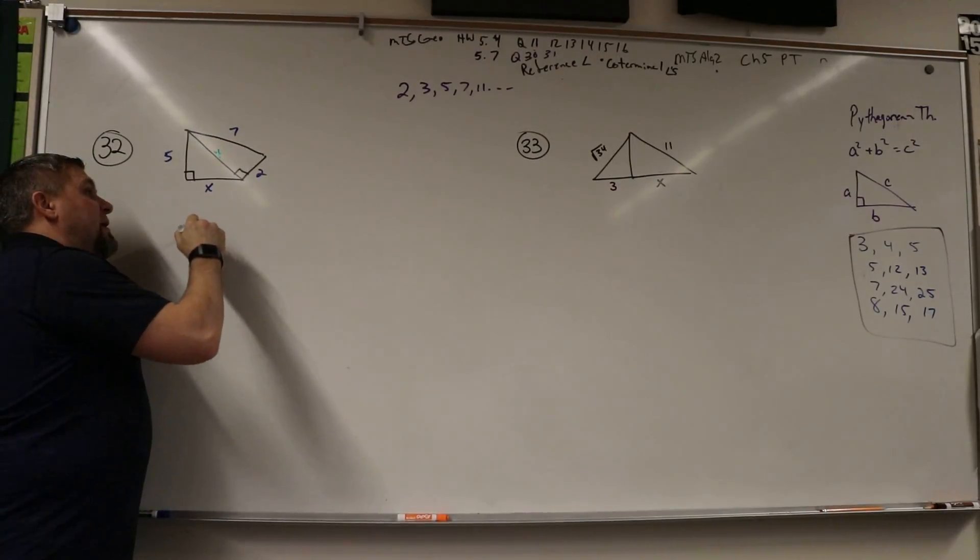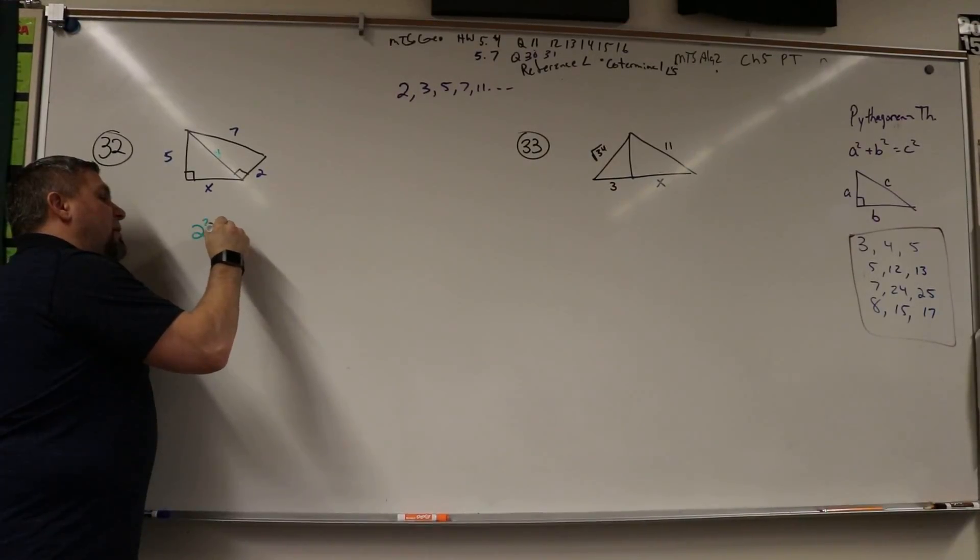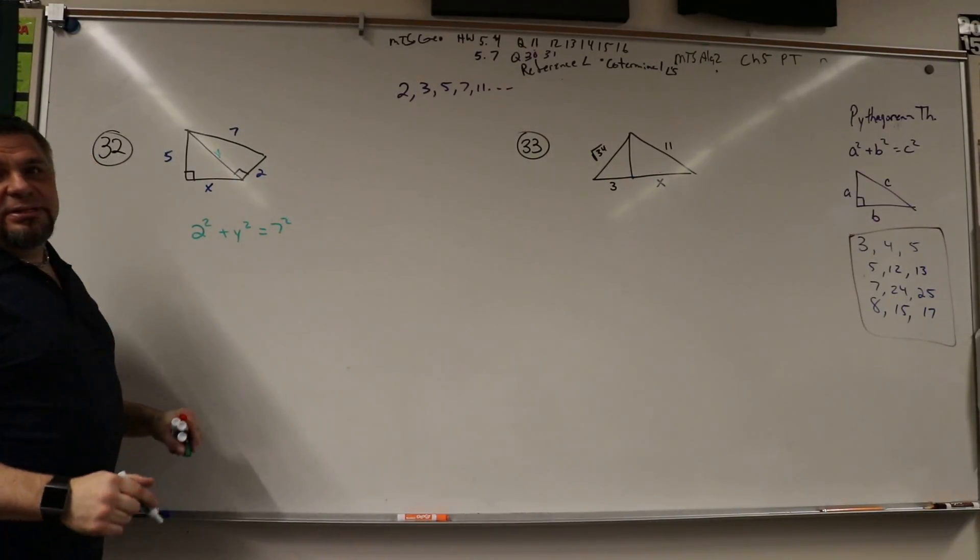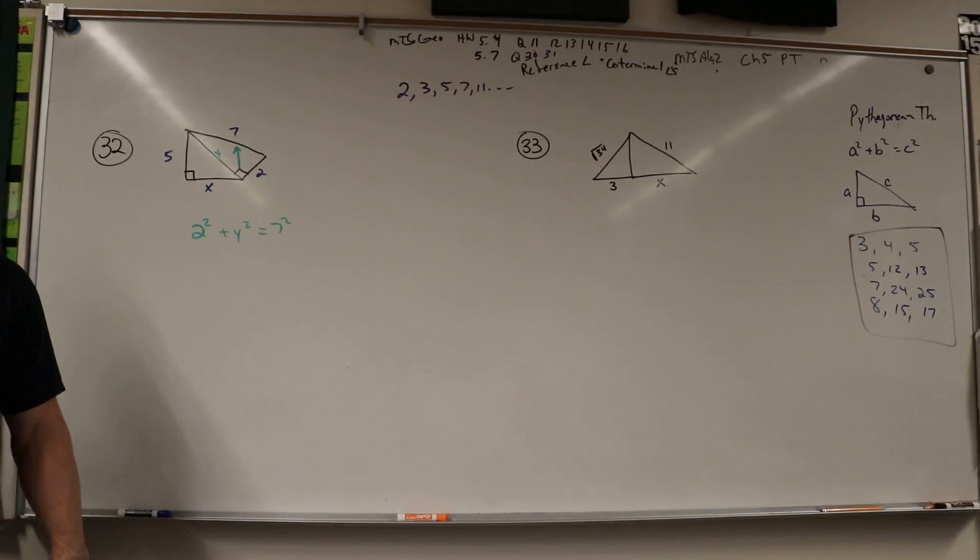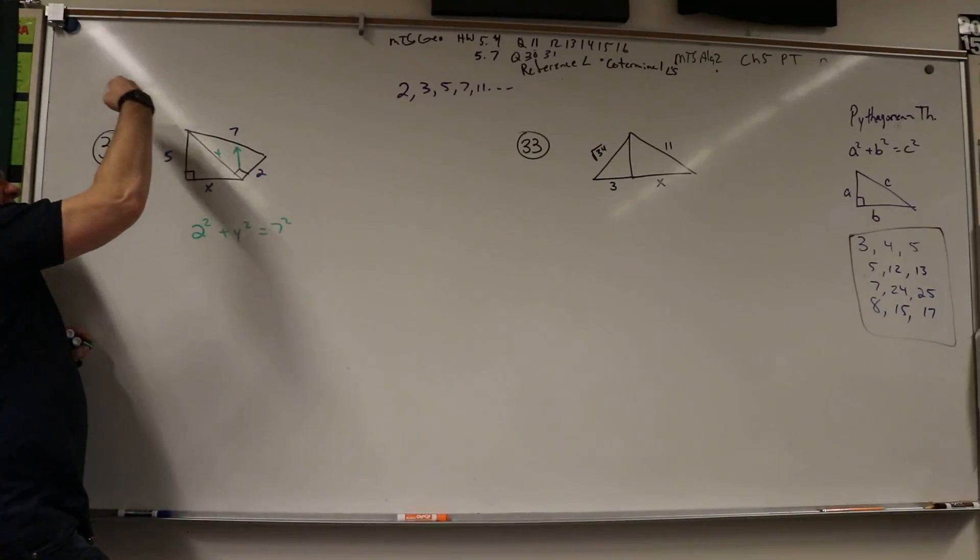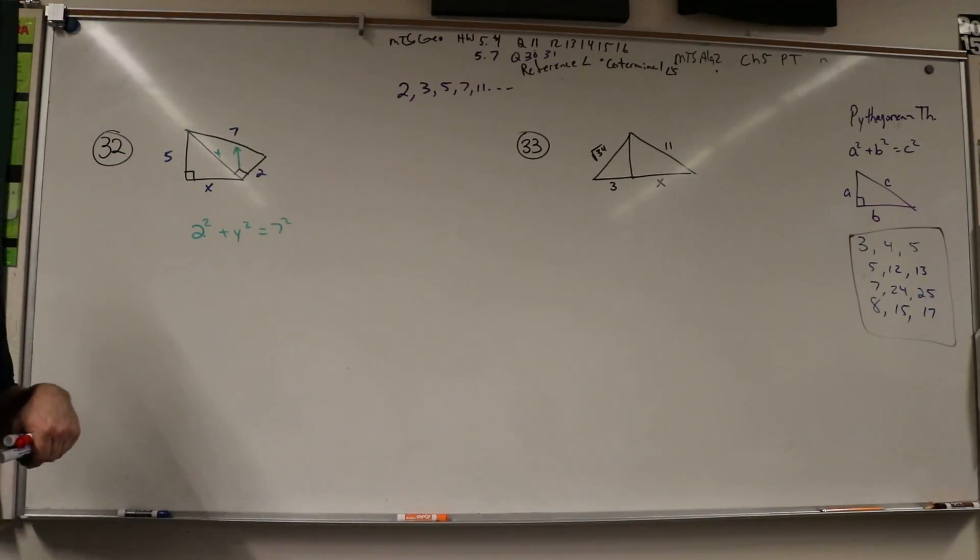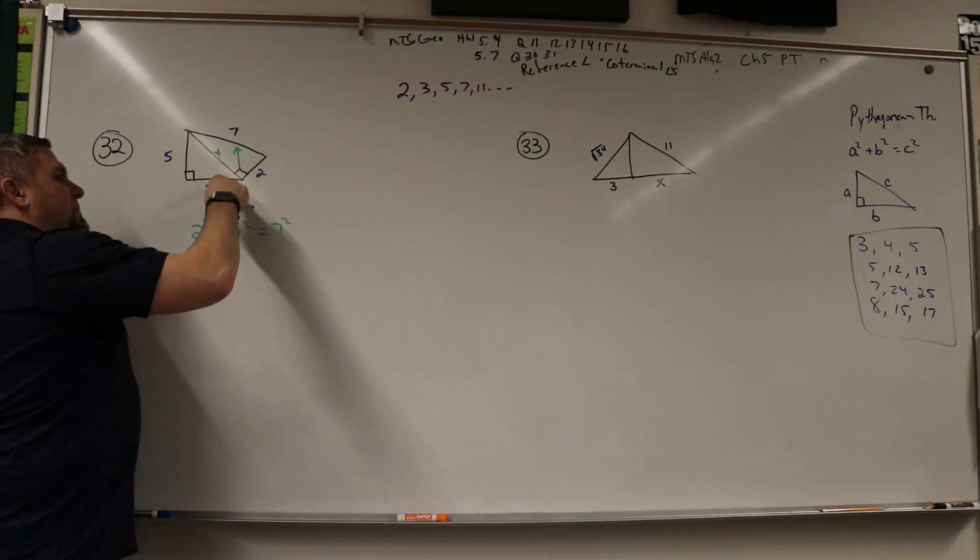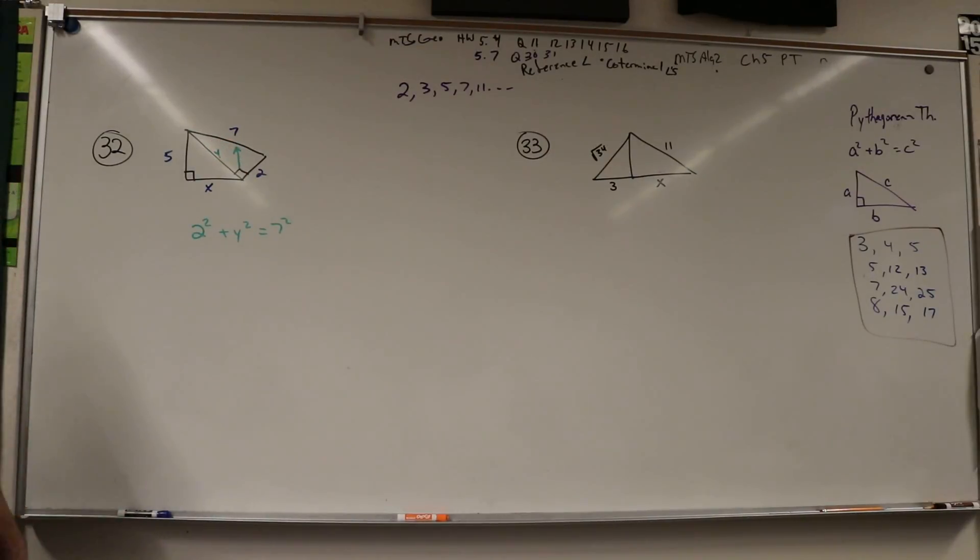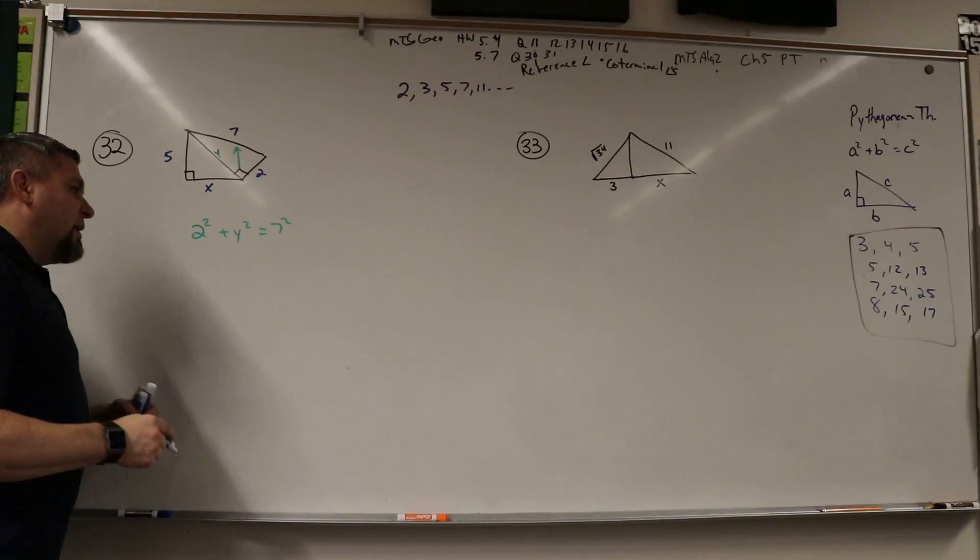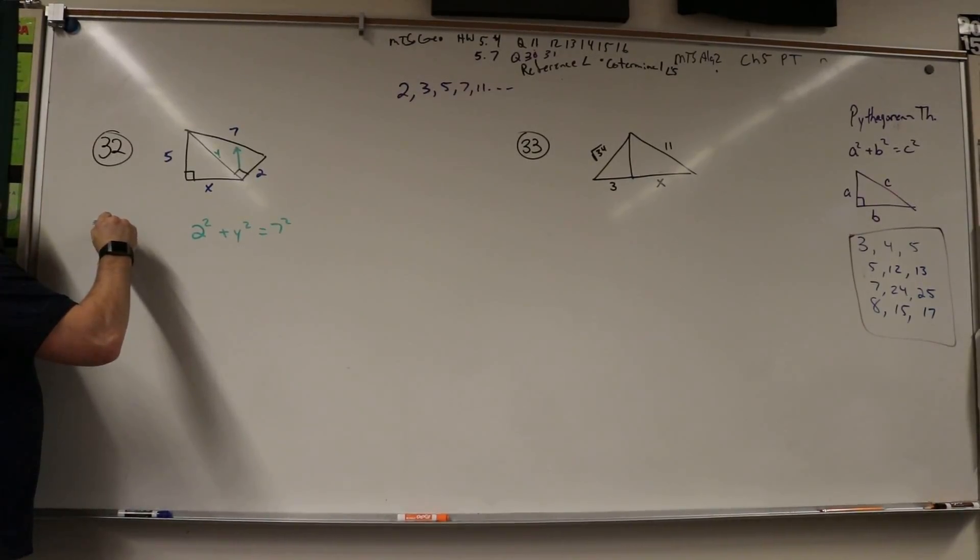I don't know what this is, so I'm going to label it y. That means 2² + y² = 7². Notice how this is always the c - c is always the hypotenuse. This can be a or b, I don't care. And so what I'm using here is Pythagorean theorem.